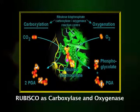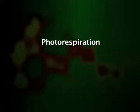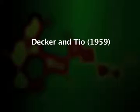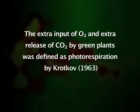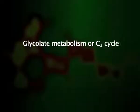Under low atmospheric concentration of carbon dioxide (below 1%) and high concentration of oxygen, RuBisCO fixes atmospheric oxygen instead of carbon dioxide, and the process is known as photorespiration. It was Decker and Tio in 1959 who reported that light induces oxidation of photosynthetic intermediates with the help of oxygen in tobacco. The extra input of oxygen and extra release of carbon dioxide by green plants was defined as photorespiration by Krotkov in 1963. Photorespiration is the uptake of oxygen and release of carbon dioxide in light, and results in the biosynthesis of glycolate in chloroplasts and the subsequent metabolism of glycolic acid in the same leaf cell. The biochemical mechanism for photorespiration is also called glycolate metabolism or C2 cycle.